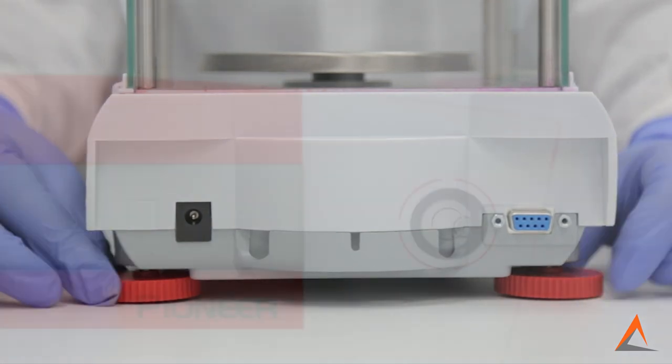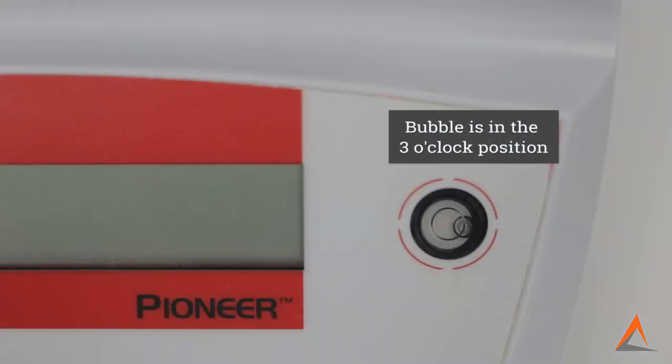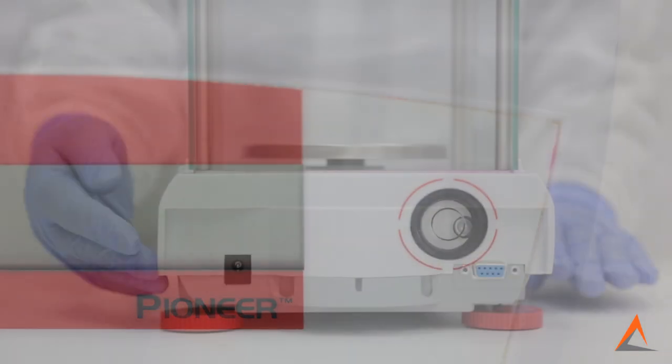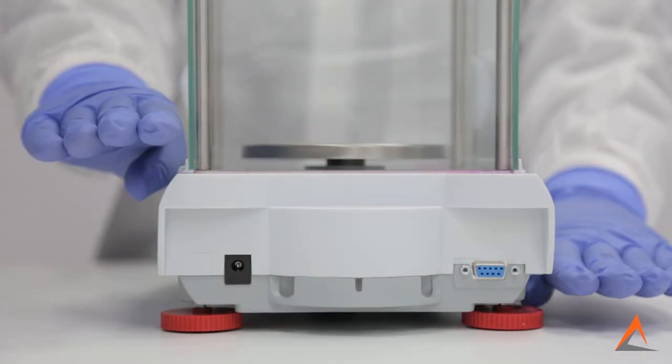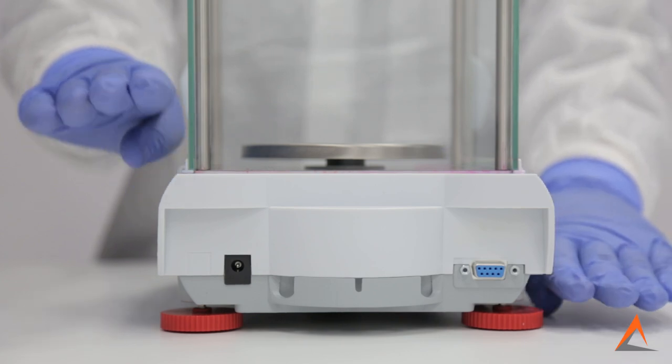Now, if the air bubble is in the three o'clock position, this is indicating the right side of the balance is higher than the left side, meaning the balance is vertically level but not horizontally.